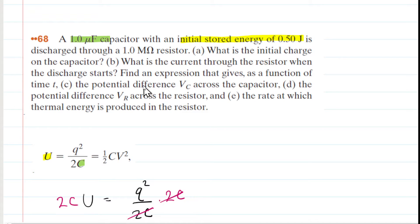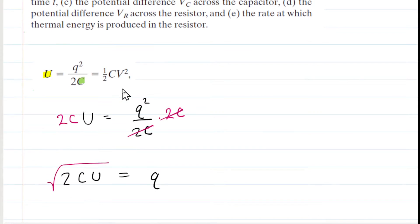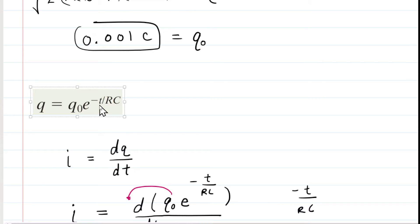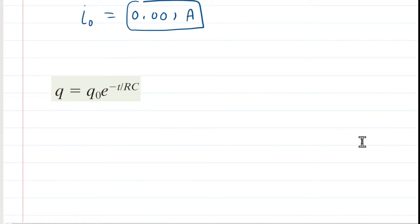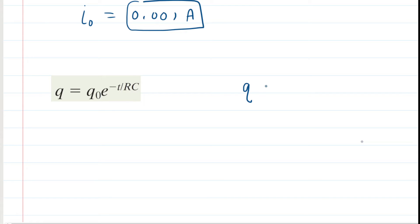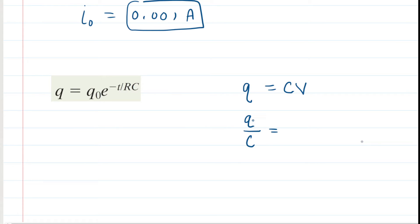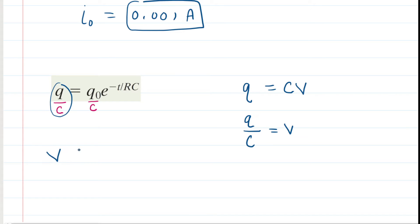Part C asks for an expression giving the potential difference V_C across the capacitor as a function of time. We take the discharging equation and convert it into a potential equation, using the relation Q = C times V. Dividing both sides by C gives Q over C equals V. So dividing both sides of the charge equation by capacitance C, Q over C becomes the potential difference across the capacitor plates.